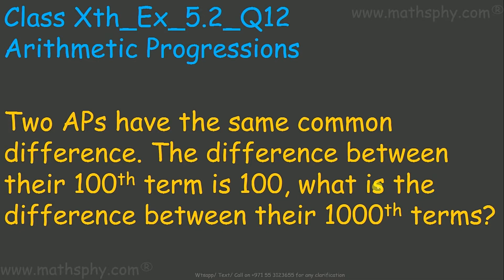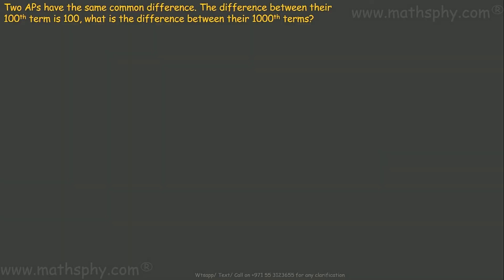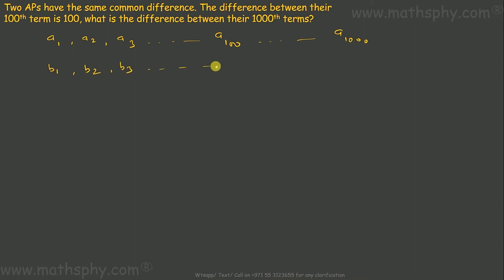This question says two APs have the same common difference. The difference between their 100th terms is 100. What is the difference between their 1000th terms? I have two series — I call the first one a1, a2, a3, then a100, then a1000, and the second one b1, b2, b3, then b100, going till b1000. It says the difference between a100 and b100 is 100, and we have to find the difference between a1000 and b1000.